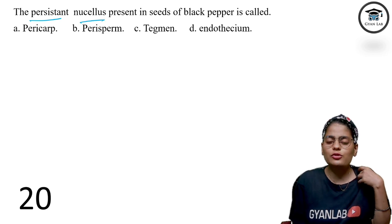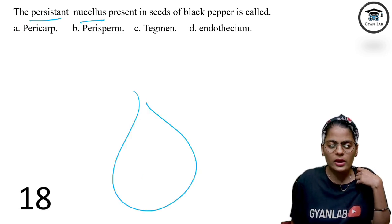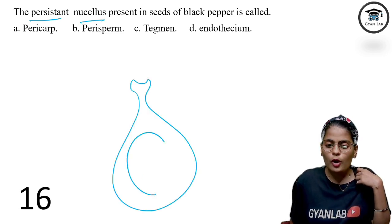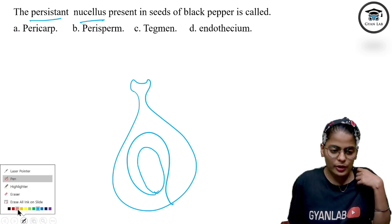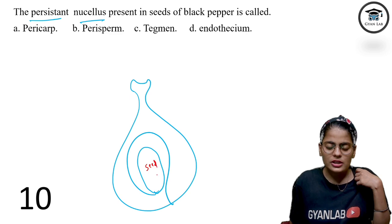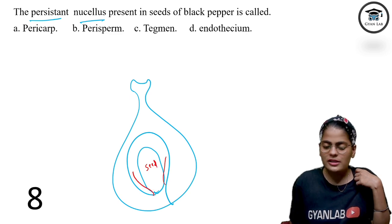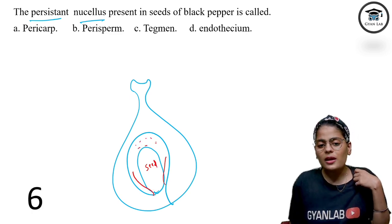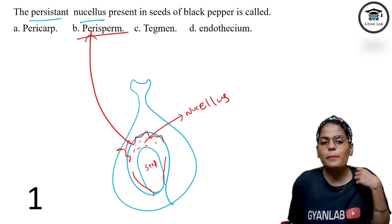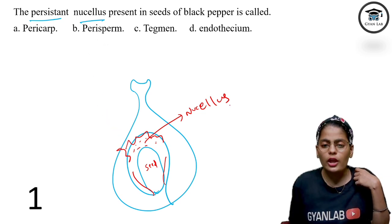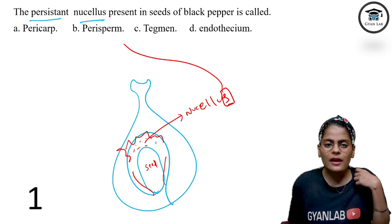The persistent nucellus — look, this is the ovary of a plant, and this is the ovule. Inside the ovule is the embryo sac. When the embryo sac becomes a seed, the outer and inner integuments become the testa and tegmen. The remaining nucellus shrinks and forms a paper-like layer. This paper-like layer is called perisperm. To remember: the word 'nucellus' has an S, and 'perisperm' also has an S.